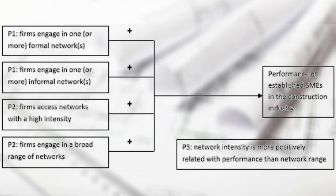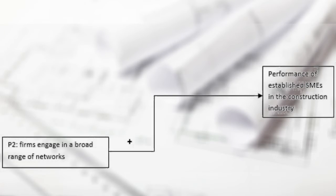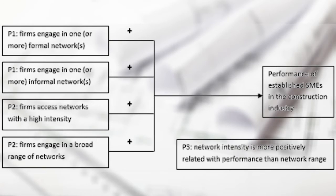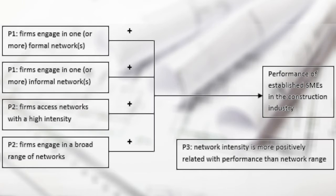Concerning the second proposition, we found that network intensity and network range are both positively related to the performance of the company. However, contradicting to our third proposition, we found that they are both equally important for performance.